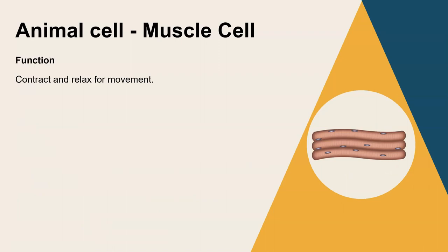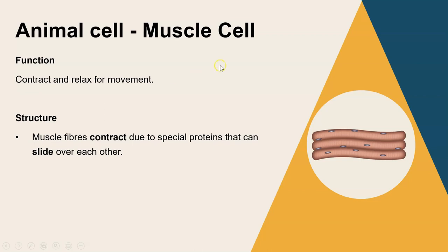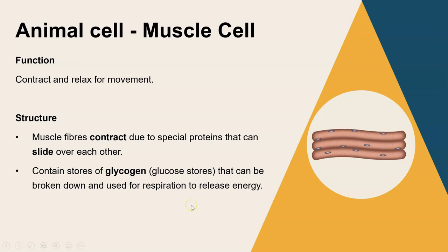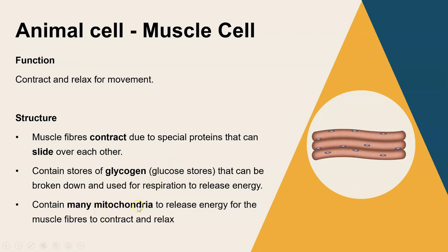The next cell is a muscle cell. The function is contracting and relaxing - in the skeleton this allows bones to move, and muscles also line certain organs like the stomach to help churn up food. The structure involves muscle fibers made up of two different proteins that slide over each other - as they slide together the muscle contracts, as they slide apart the muscle relaxes. Energy is required to do this, so there are lots of stores of glycogen - many glucose molecules bonded and stored - which can be broken down to release glucose needed for respiration. Aerobic respiration happens in the mitochondria, so you also find lots of mitochondria in muscle cells.